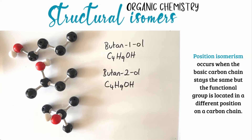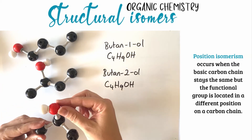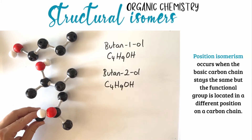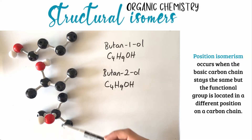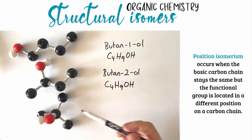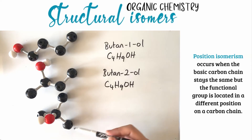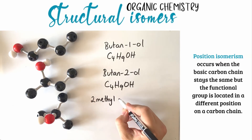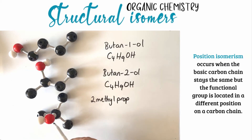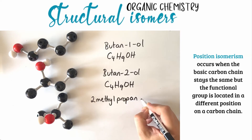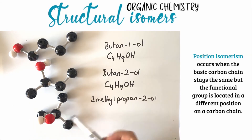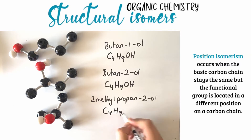Now consider this molecule. This molecule is made up of four carbon atoms with an OH functional group. The OH functional group is located on the second carbon of the longest chain, which is only three carbons long. On the second carbon, not only does it have the functional group but it also has a methyl group. This molecule is called 2-methylpropan-2-ol because there are three carbons in the longest chain and the functional group is located on the second carbon. The chemical formula for this molecule is also C4H9OH.